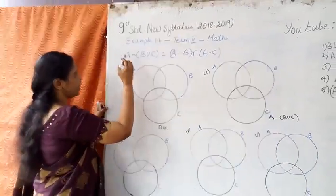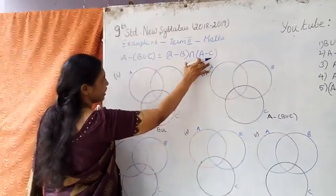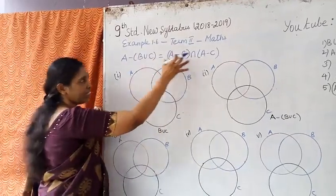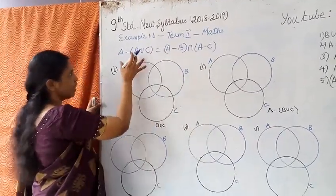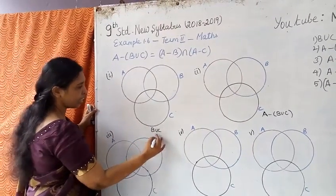This is called the left hand side, and this is the right hand side. Firstly left hand side, bracket first. B union C.